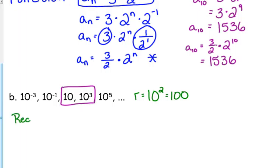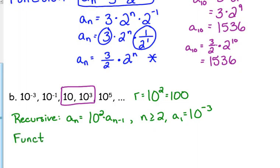Our recursive formula, a sub n equals 10 squared times a sub n minus 1, where n is greater than or equal to 2, and a sub 1 equals 10 to the negative third.